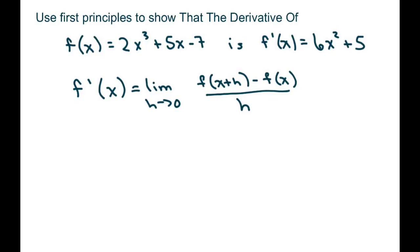Hi everyone, we're going to use first principles to show that the derivative of f(x) equals 2x³ + 5x - 7 is 6x² + 5.